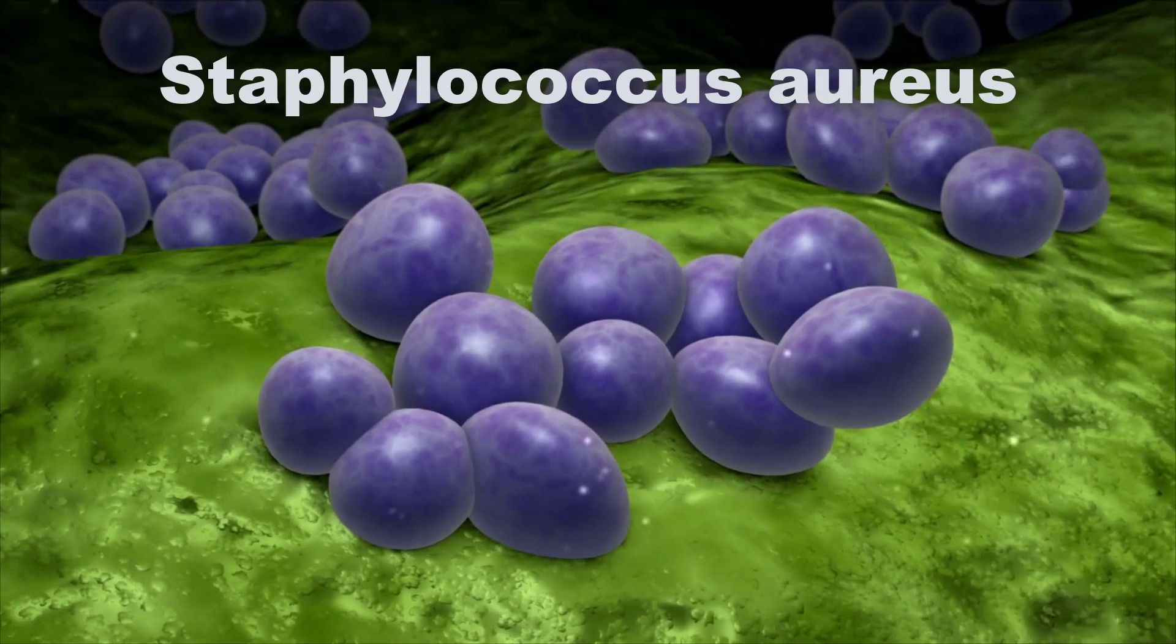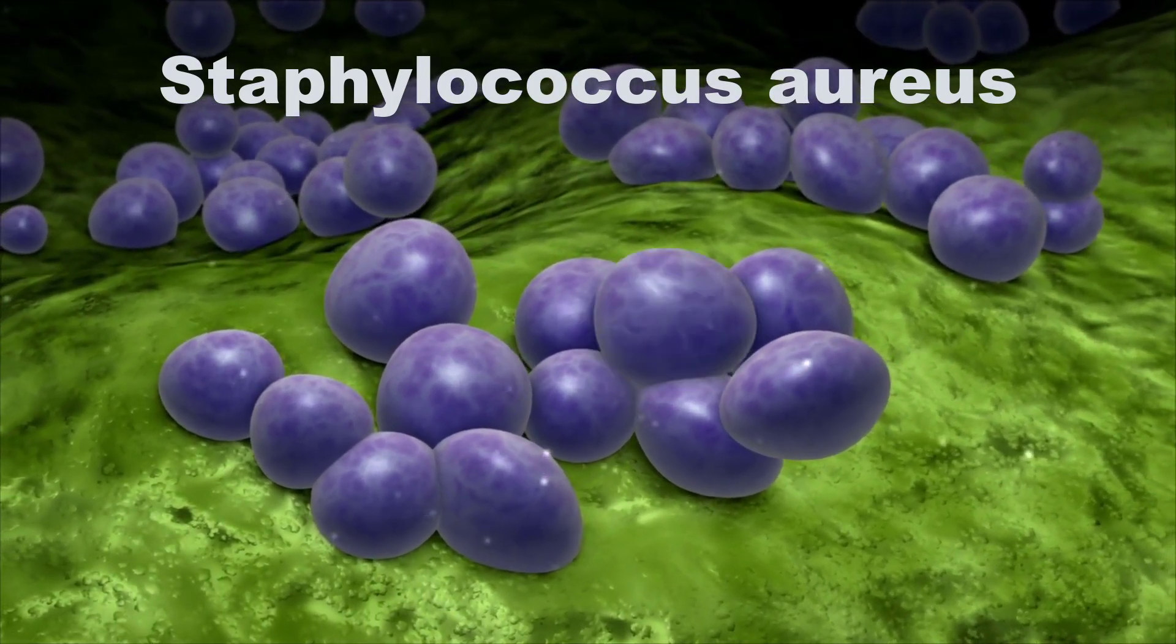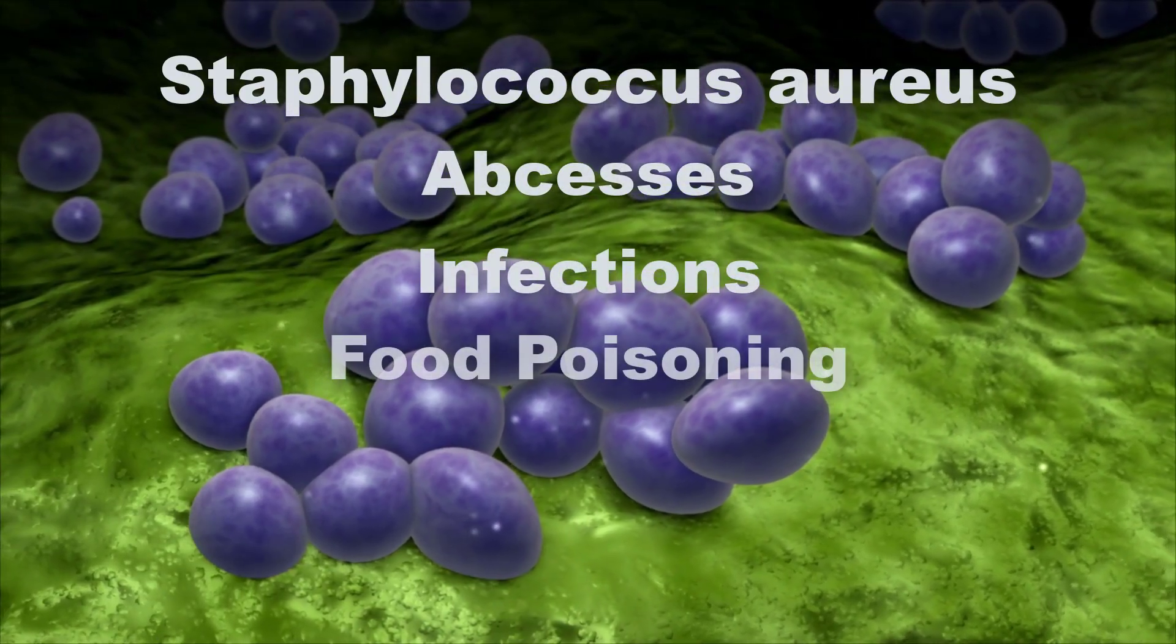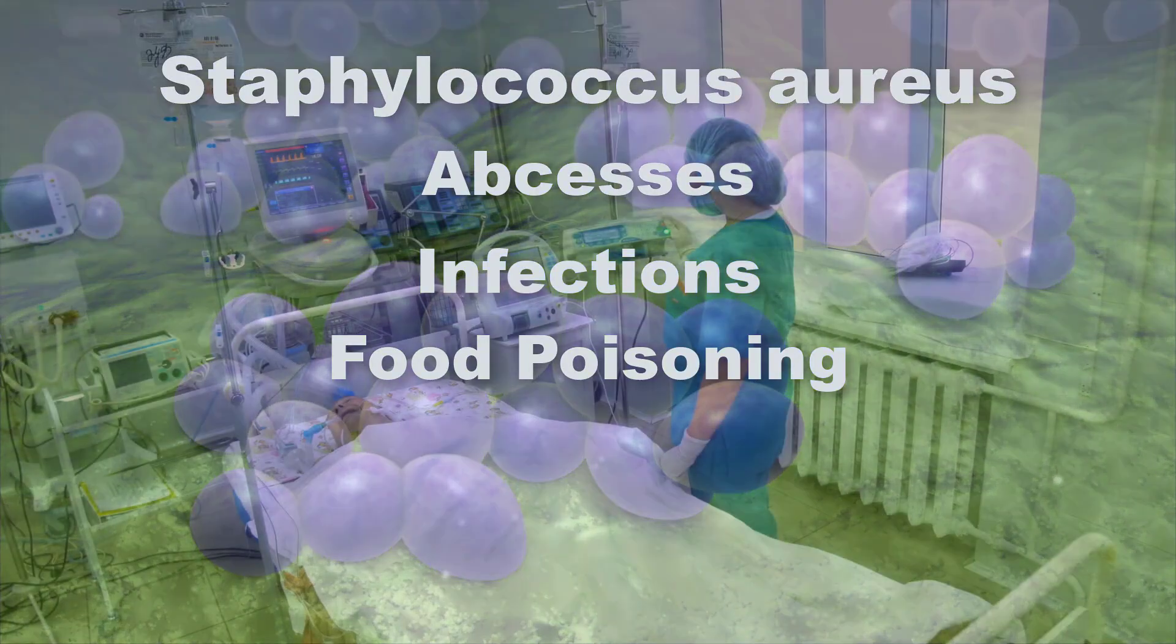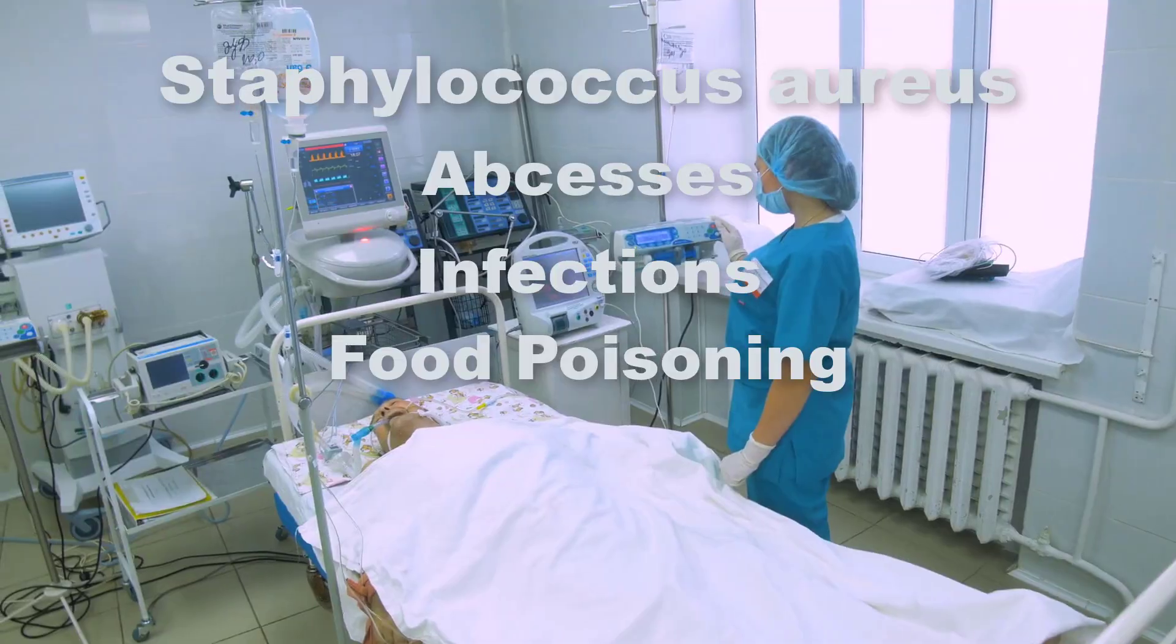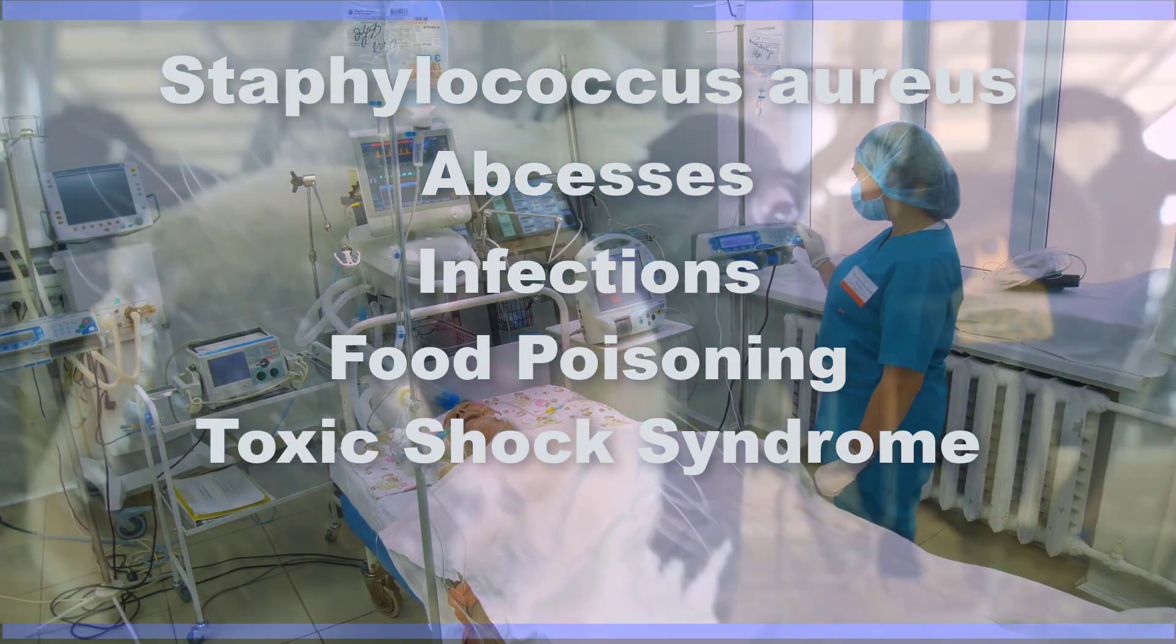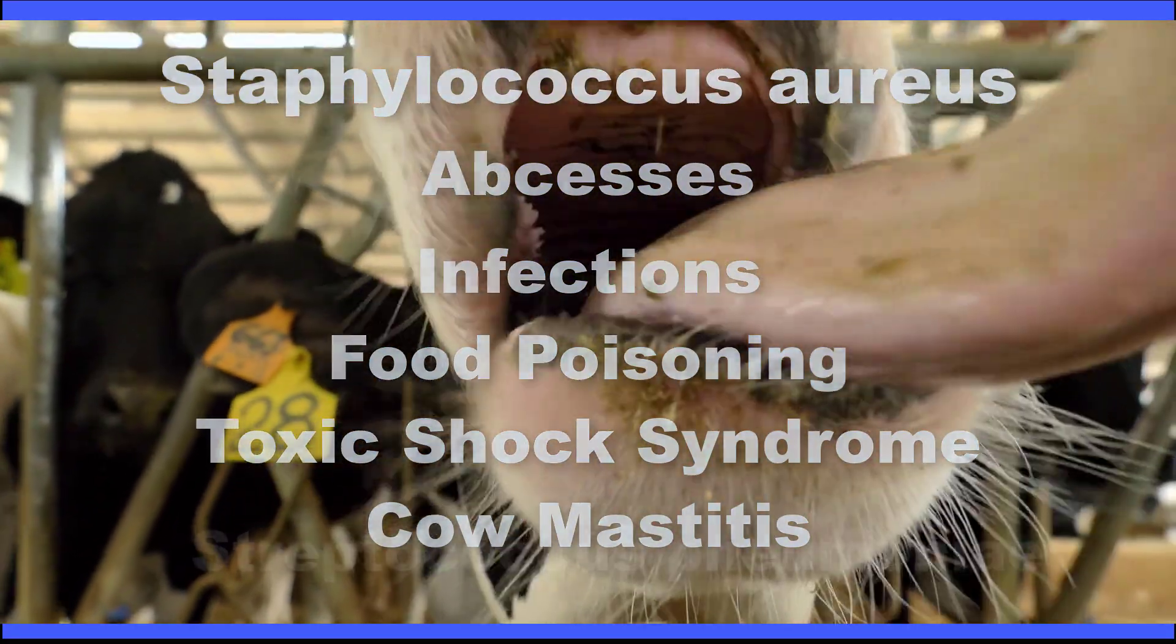Staphylococcus aureus is a pathogenic bacteria. It causes superficial and deep abscesses, wound infection, infection of various internal organs, and can lead to sepsis of the blood and death. Staphylococcus aureus causes food poisoning and toxic shock syndromes. It is also the principal cause of cow mastitis, which affects domestic cows.